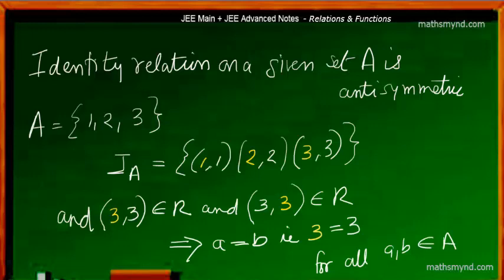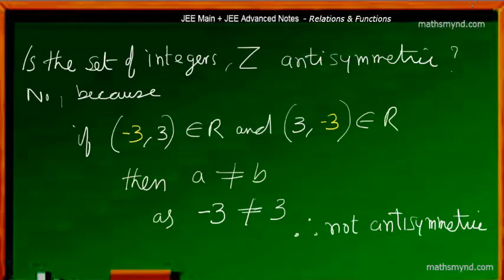Now let us take another case to further prove the point. Suppose we are taking the set of integers — is it anti-symmetric? We know that integers consist of both positive and negative integers. For minus 1 you have 1. The first component is given the yellow coloration, and it's not the case because the first component is not equal to the second component — the negative integer is not equal to the positive integer. In this particular case, minus 3 is not equal to 3. So the set of integers is not anti-symmetric.